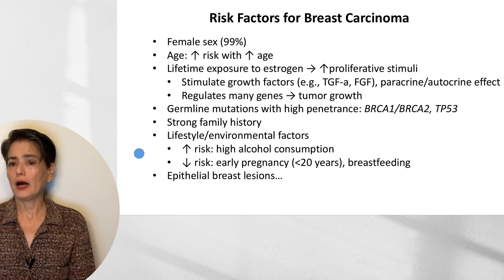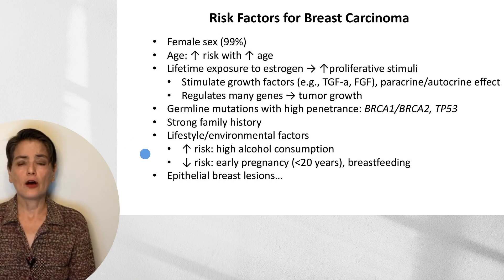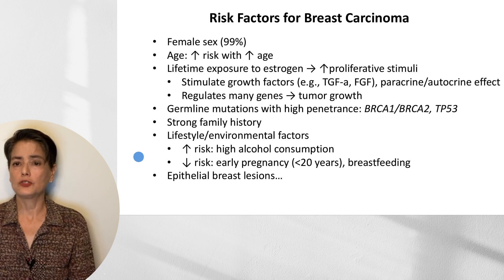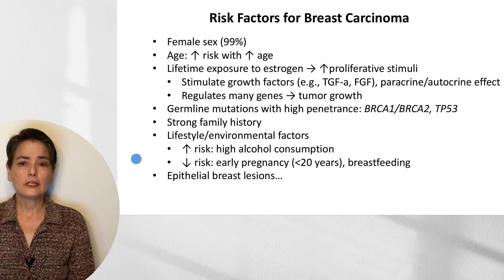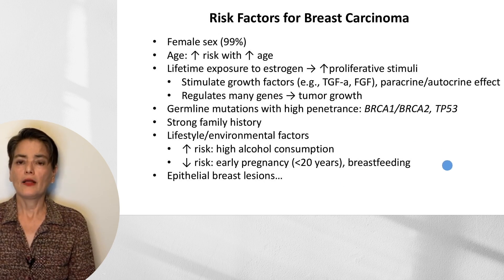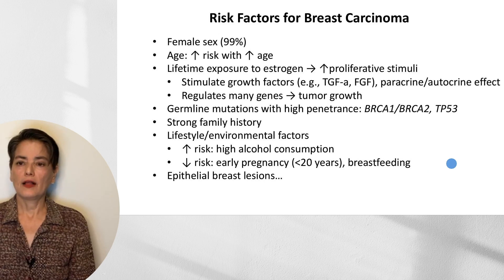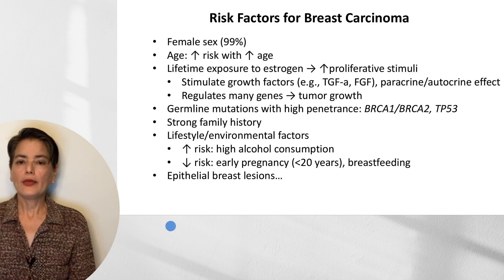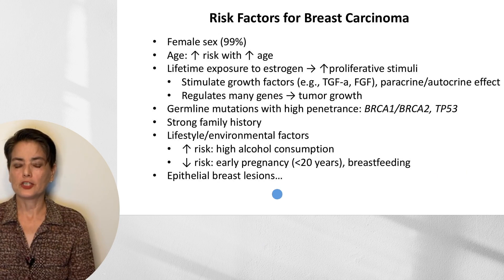In the next slide, I will describe what a strong family history is. We also have lifestyle and environmental factors. For example, high alcohol consumption increases risk — it's thought that this is because it increases estrogen in the body. Decreased risk is seen with pregnancy before the age of 20 years and with breastfeeding, which decreases lifetime exposure to estrogen. And then we have our epithelial breast lesions.